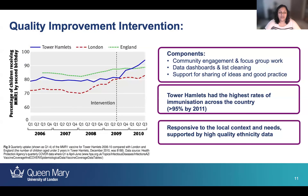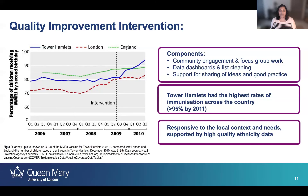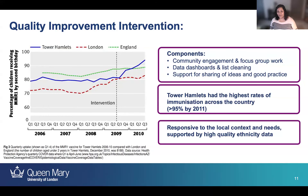This shows an example of how our intervention to improve vaccination rates in our local area worked. Comparing Tower Hamlets in the blue line to England in the green line and London in the red line, thanks to our engagement and designing an intervention which was locally relevant, we were able to show the fastest improvement in vaccination rates in the whole country — outstripping both London and England — because we were responsive to the local context and supported by high-quality ethnicity data.